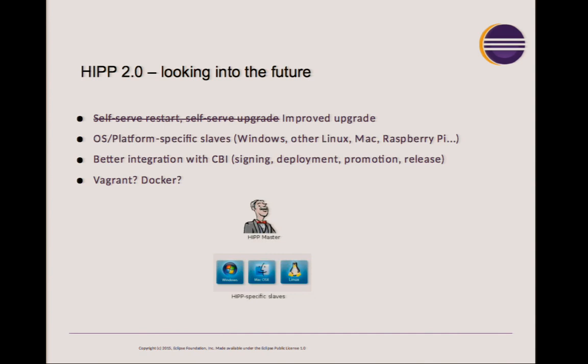Looking forward, we want to provide better services for our community — for instance, improving the upgrade process and making it as self-serve as possible, allowing committers to not have to wait on us. We also want to acknowledge that Eclipse is a lot more than just Java and a Java IDE. We have people that want to build stuff for Raspberry Pis, C builds, native builds, Mac builds, signing, and so on. So we have to start investigating deploying Windows, Linux, and Mac platforms.